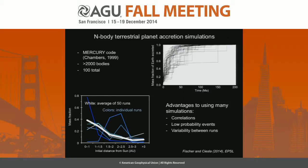There are several advantages to doing things this way. One is that it allows us to look for statistical correlations between our ability to match different solar system properties, so we can make sure that the simulations we use actually provide plausible growth histories for the Earth. We also get a chance to observe low-probability events and quantify their probabilities — for example, we see Mars formation only a few percent of the time. We also get a good sense of the range of variation a planet can experience in its accretion history.